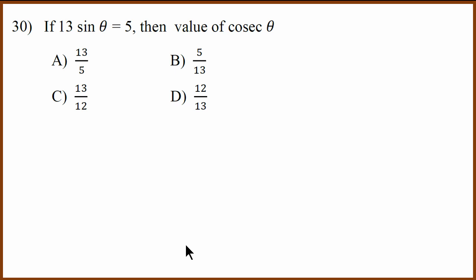This is a simple definition question. If sin theta is given, find cosecant theta. cosecant theta is 1 by sin theta and then you get 13 by 5.